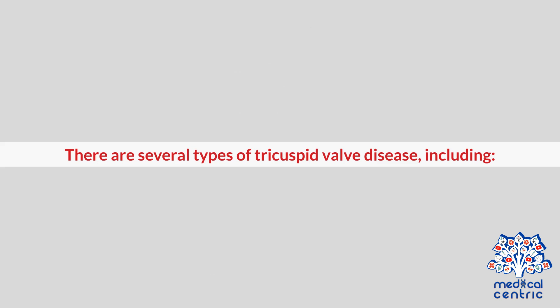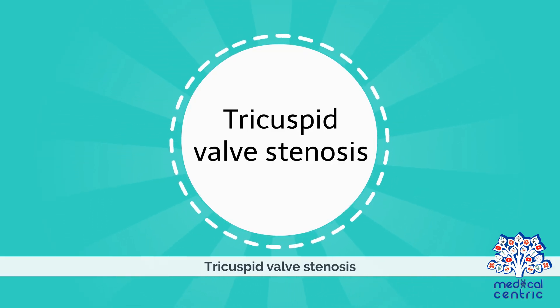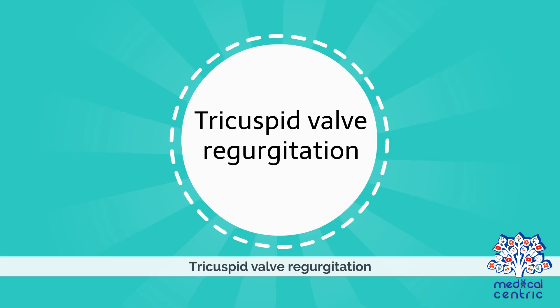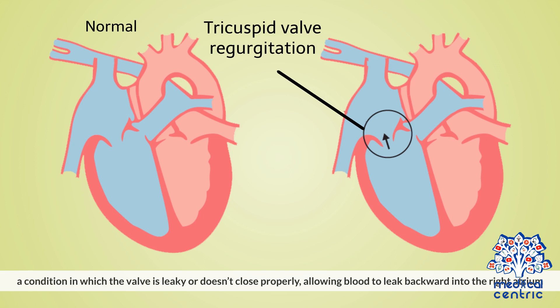There are several types of tricuspid valve disease, including tricuspid valve stenosis — a condition in which the tricuspid valve is stiff, thick, or fused. This results in a narrowed valve, decreasing the amount of blood that can flow from the right atrium to the right ventricle. Tricuspid valve regurgitation is a condition in which the valve is leaky or doesn't close properly, allowing blood to leak backward into the right atrium.